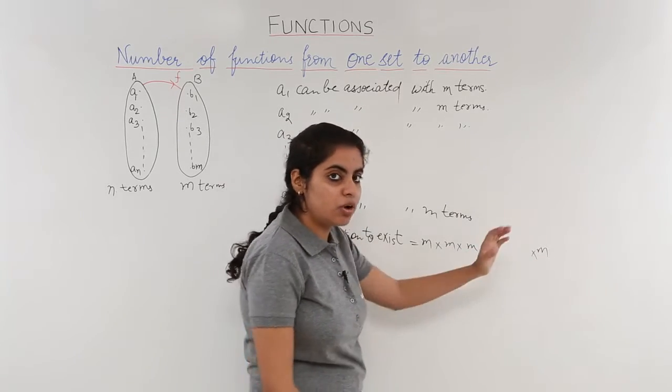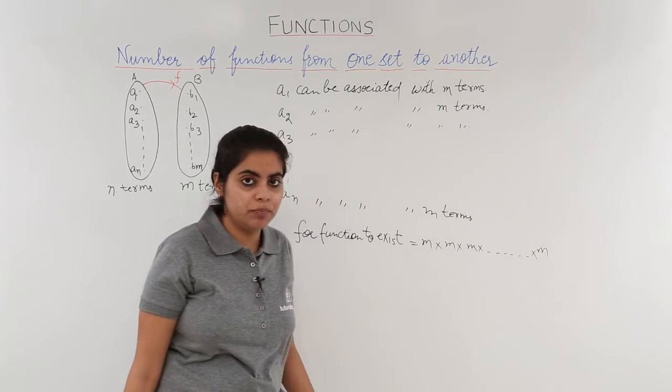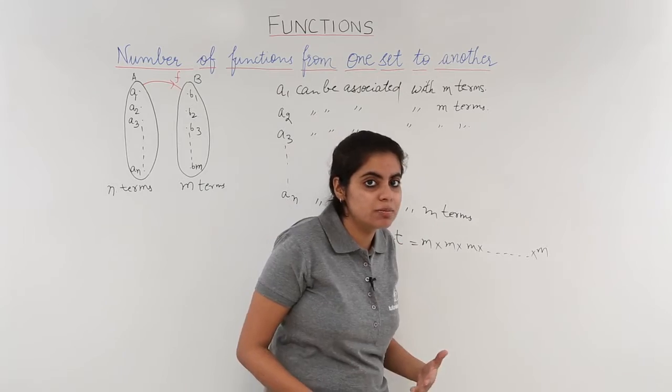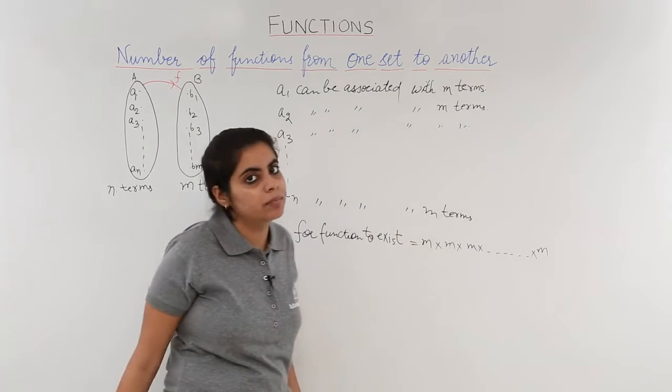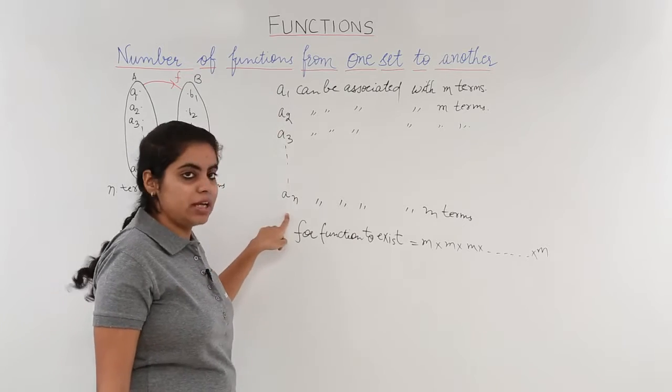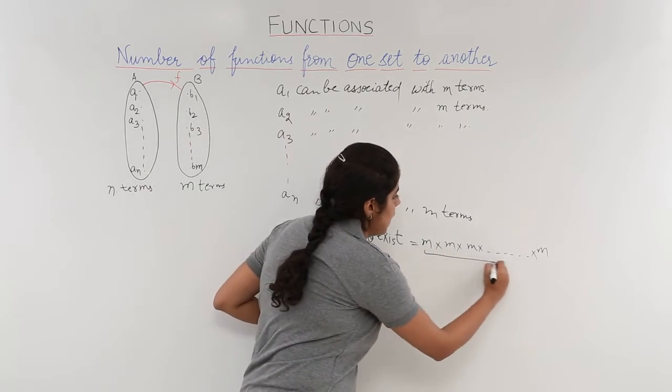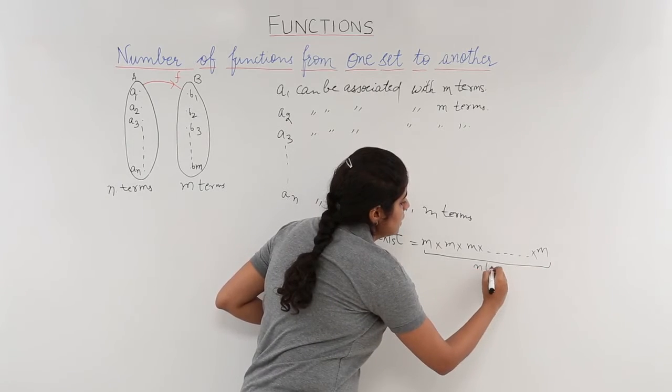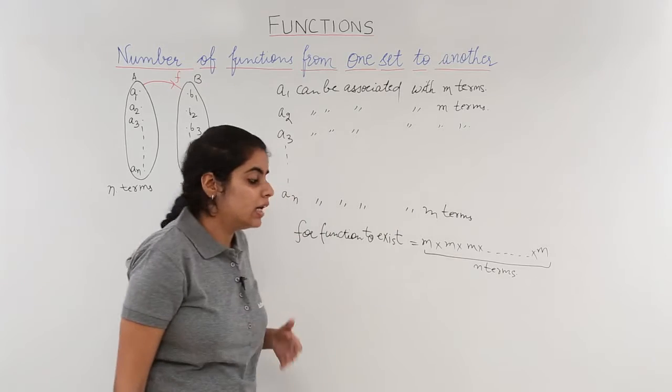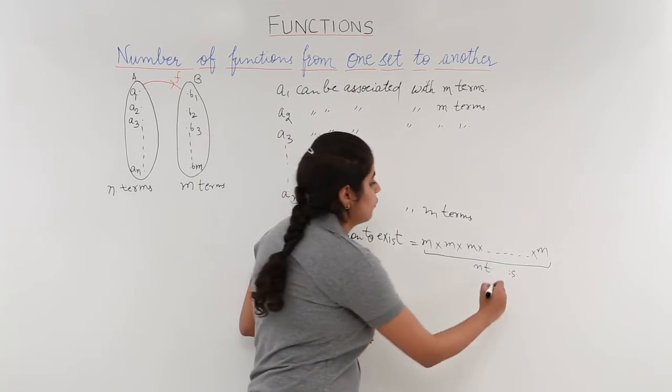And since it is happening for all of them, so we have this so on symbol. Now how many M's are there? How many times this association should be done? This association should be done these many number of times which is till N. So these M's are how many times? These M are N times. It would be better if we use N times instead of N terms.